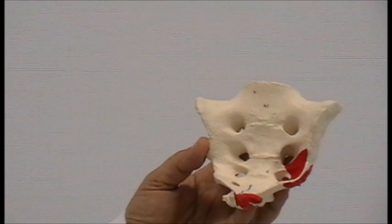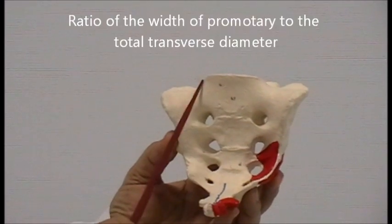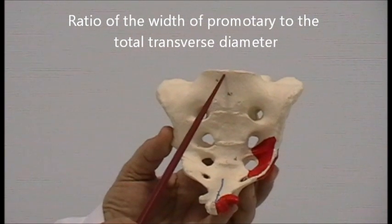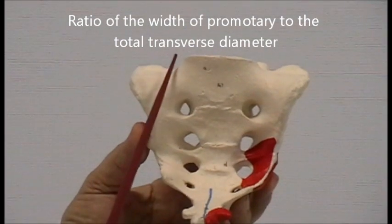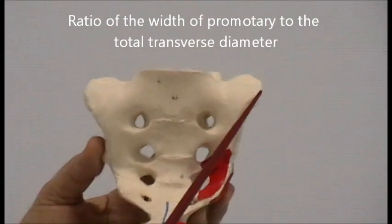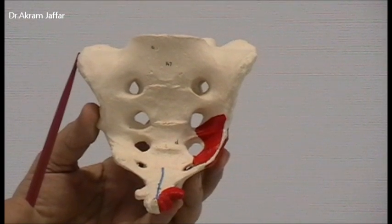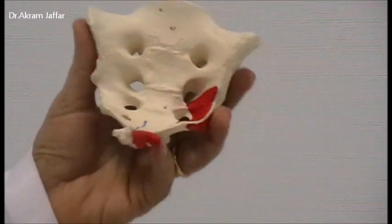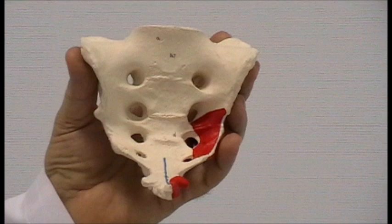As for the width, the width of the promontory — the prominent part of the first piece of the sacrum — should be one-third or less than one-third of the total transverse diameter of the sacrum in the female, but more than one-third in the male, because in the male the total transverse diameter of the sacrum is less than that of the female.